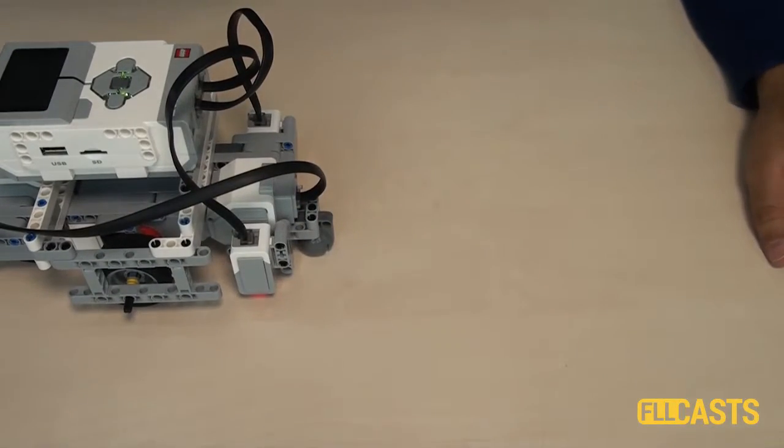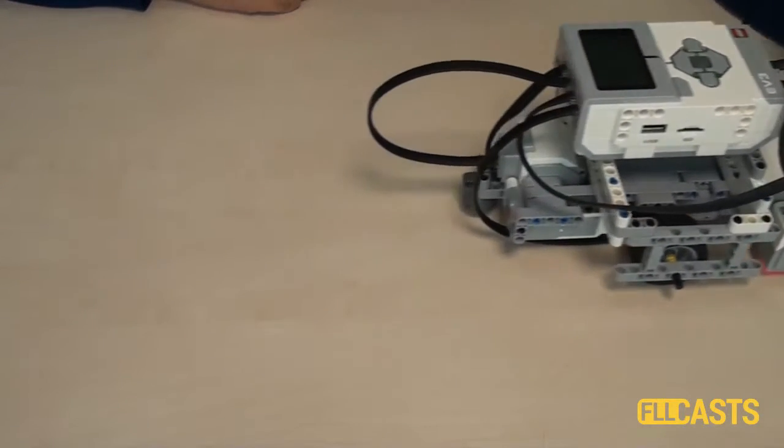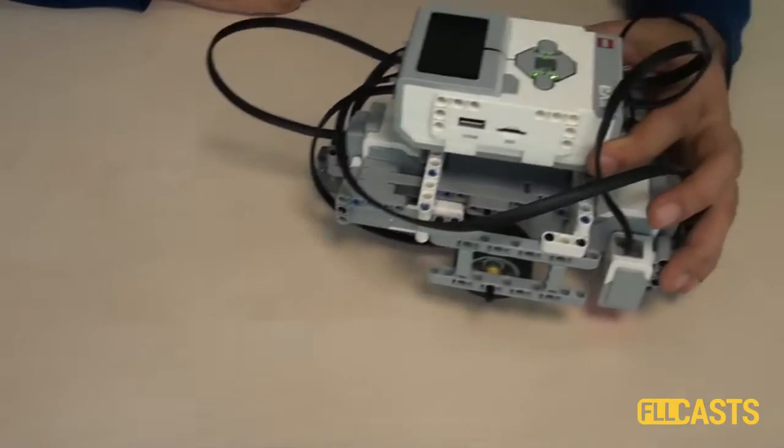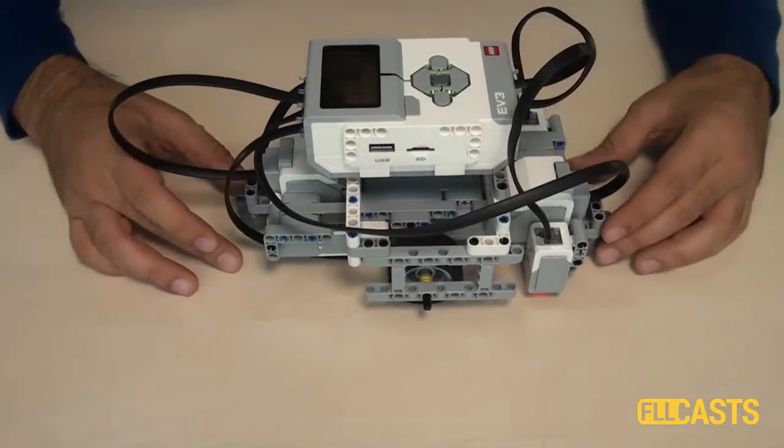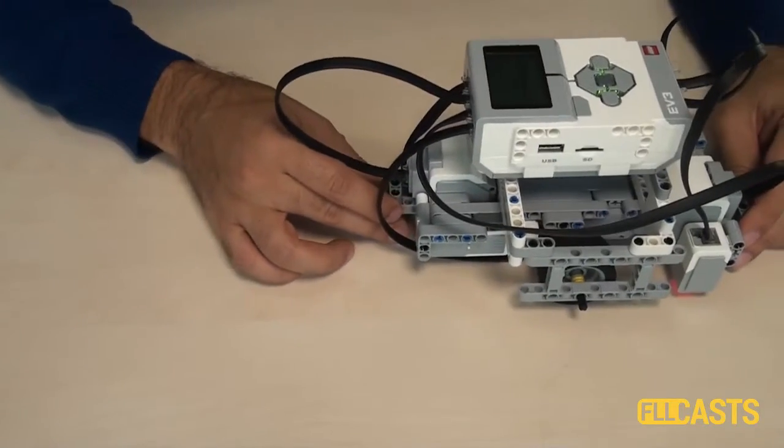As I start the program now, because one of the motors is moving forward and the other backward, the whole robot moves forward. I could change the steering to plus 100 and then the robot will move backward.